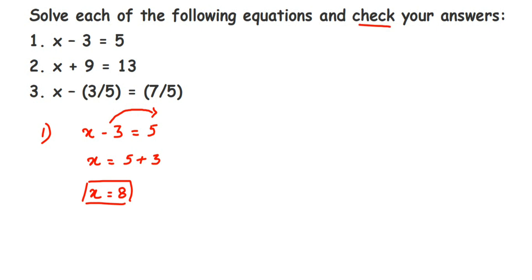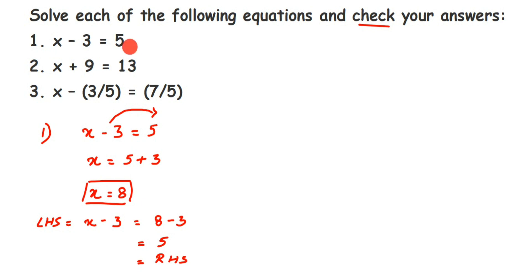Now we verify the answer — LHS should equal RHS for the answer to be correct. LHS is x minus 3, and substituting x equal to 8 gives 8 minus 3, which equals 5. Since 5 is also the RHS, LHS equals RHS, confirming x equal to 8 is the correct answer.